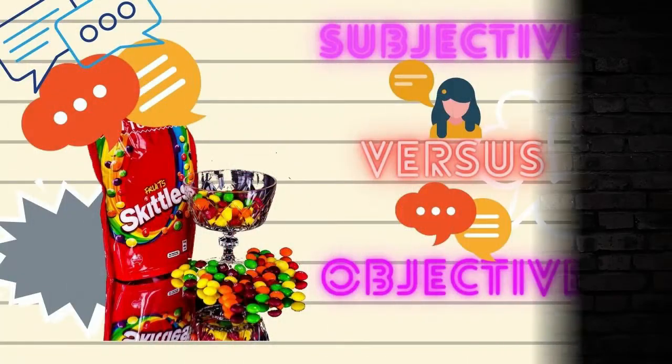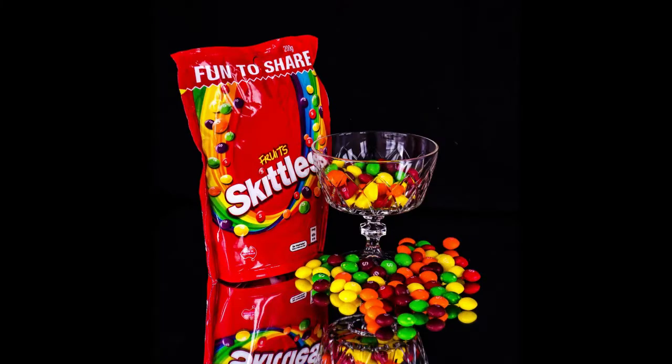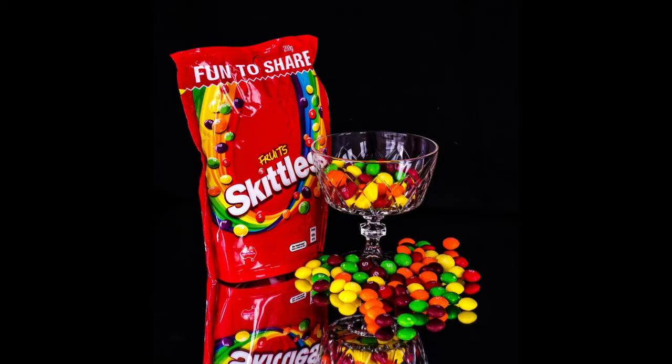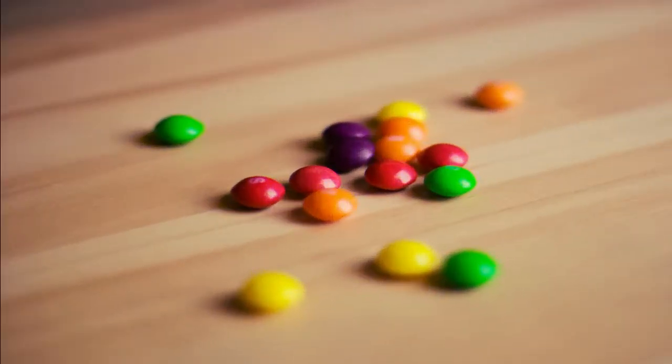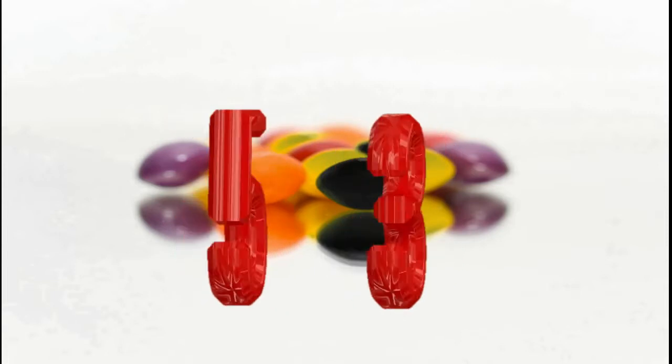This video will provide an example of a great way to talk about objective versus subjective. First, take a jar with a bunch of Skittles candy. Be sure you remember the number of Skittles you put in. For example, let's imagine that there are 53 Skittles candies in the jar.